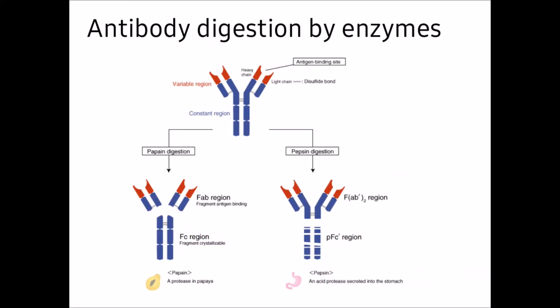In the diagram, upon pepsin digestion you recover the F(ab')2 region and small peptide fragments of the Fc region. Upon papain digestion you recover two Fab regions and one whole Fc region. Note that papain is a protease found in papaya, while pepsin is an acid protease secreted into the stomach.